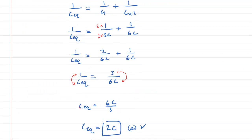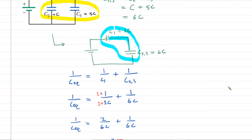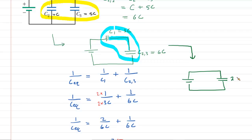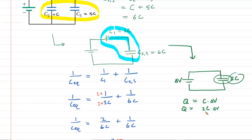To use the charge equation, we go back and look at our diagram. Our final simplified drawing has one capacitor with capacitance 2C connected to the battery supplying potential difference delta V. The charge equation tells us the total charge on this capacitor equals the capacitance multiplied by the potential difference — 2C times delta V. That's the total charge stored.